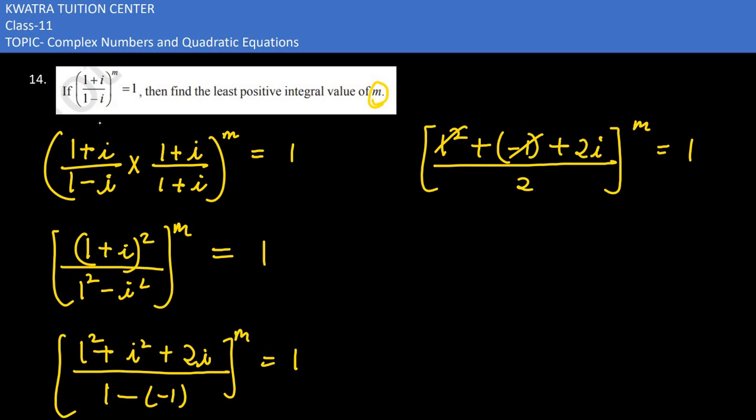1 cancels with 1. 2i over 2 remains. 2i over 2 reduces as 2 cancels. i to the power m equals 1.